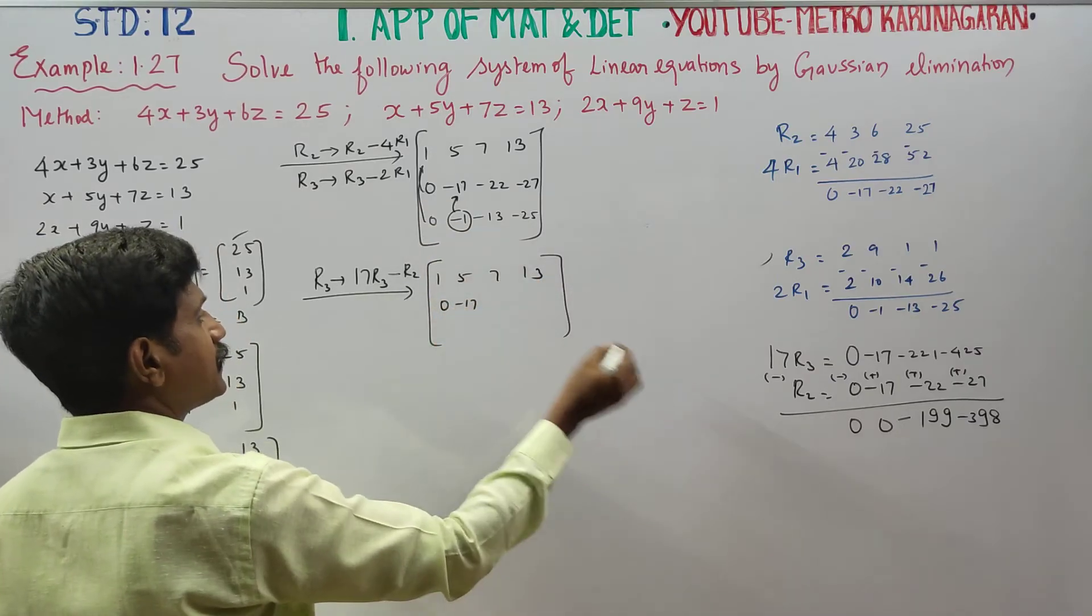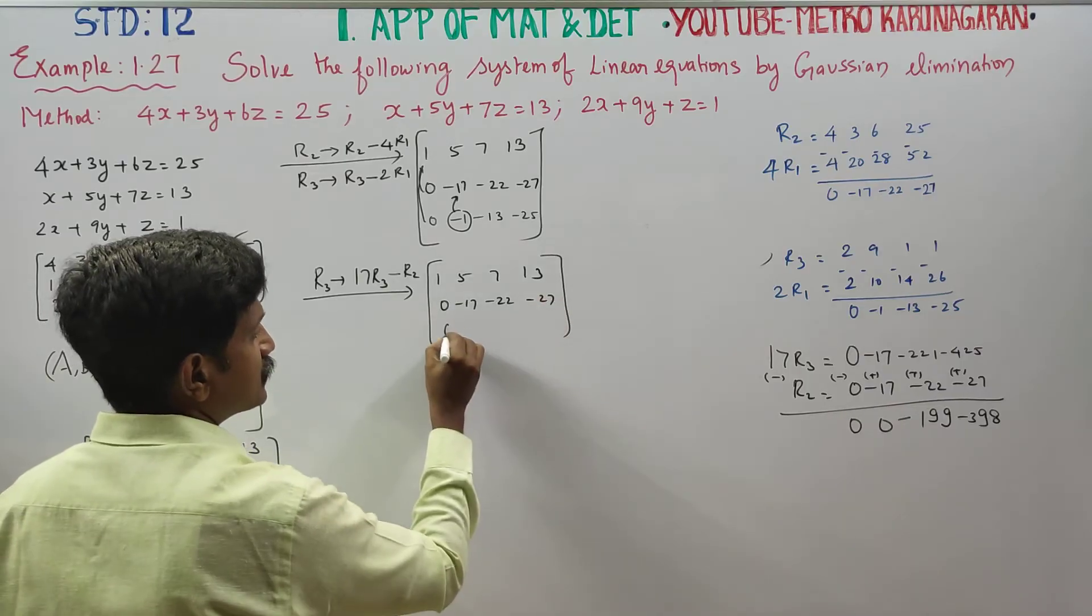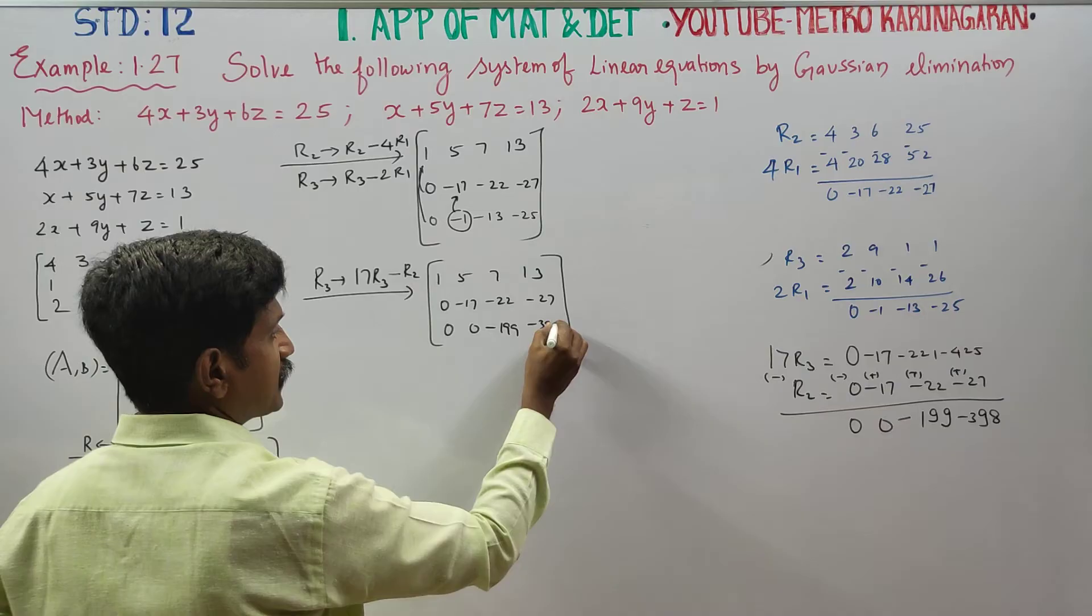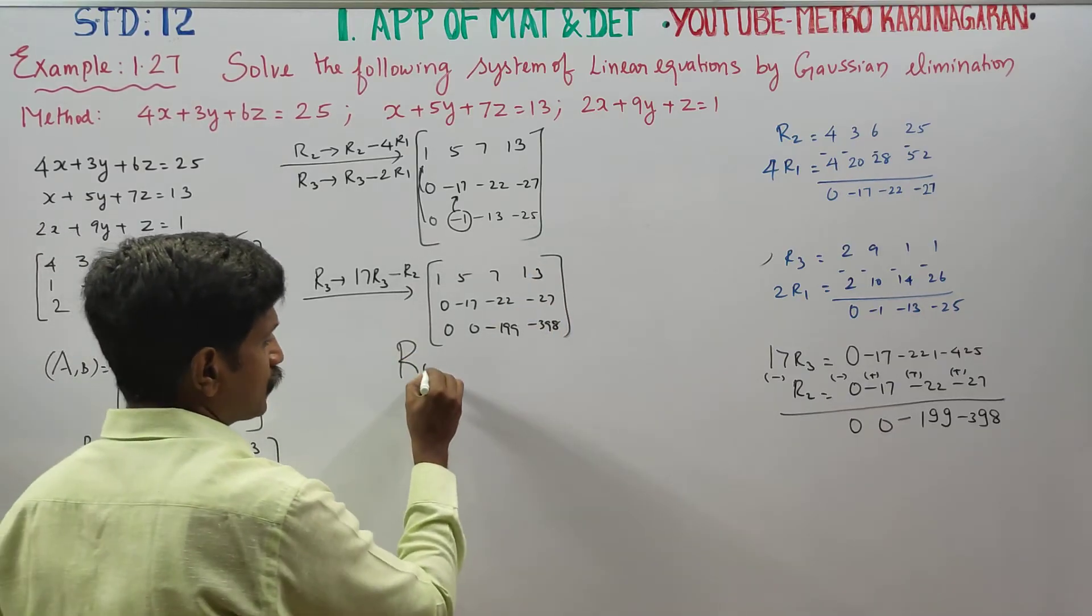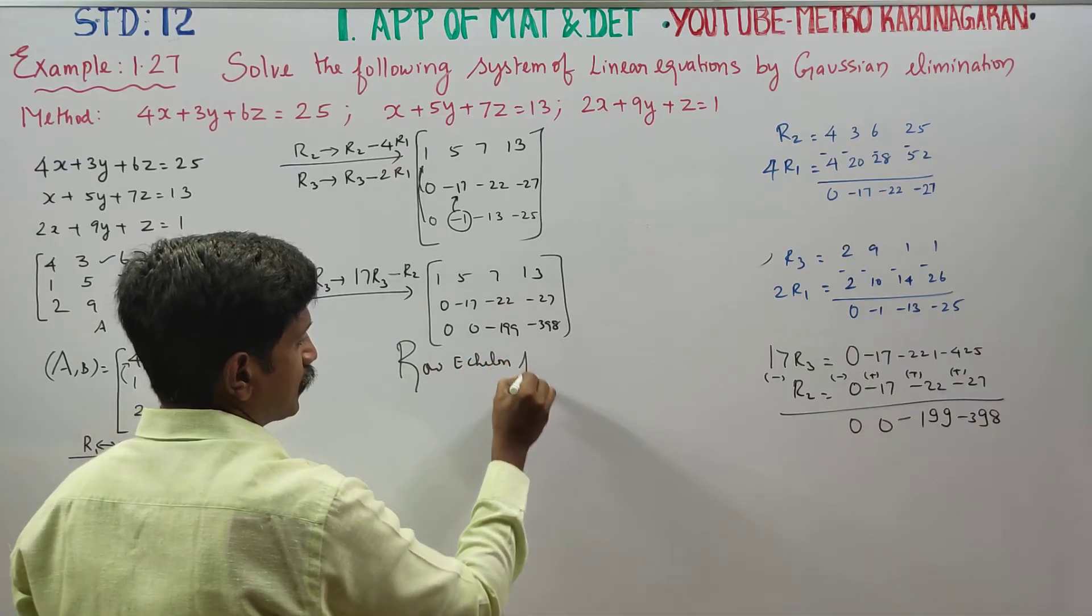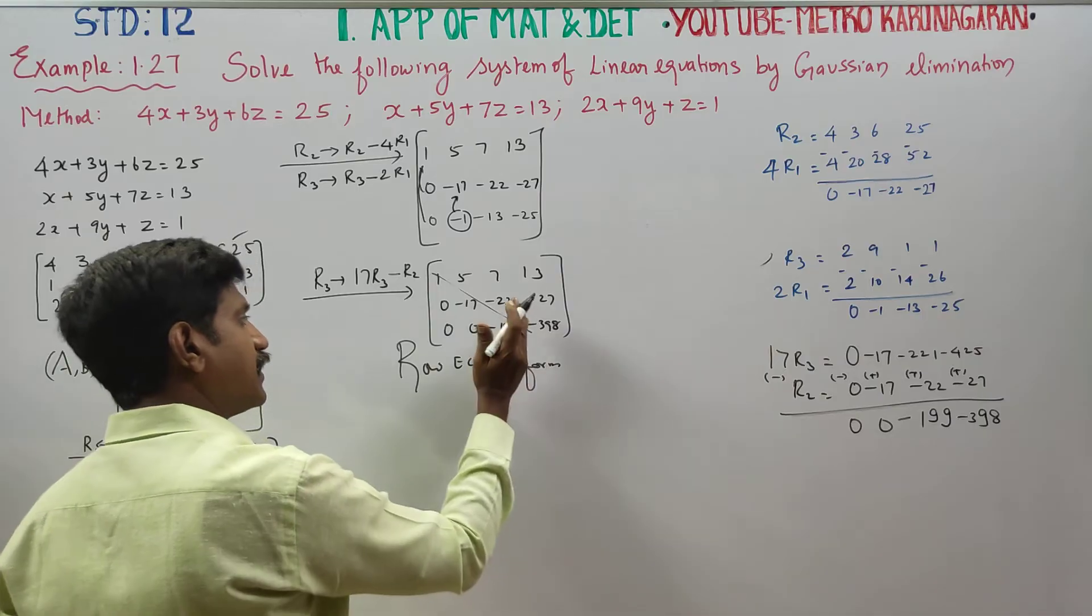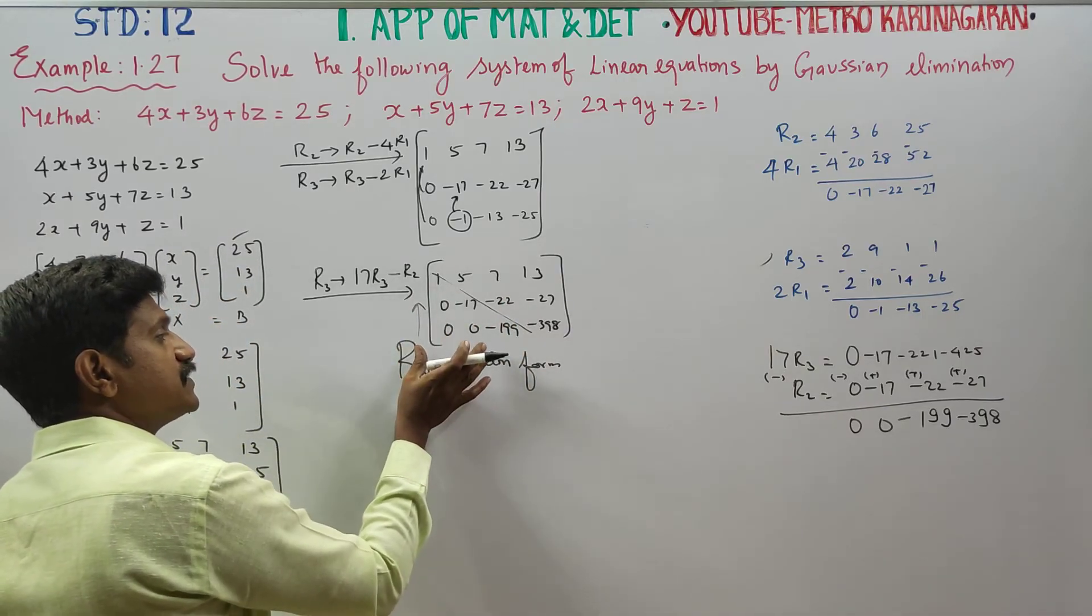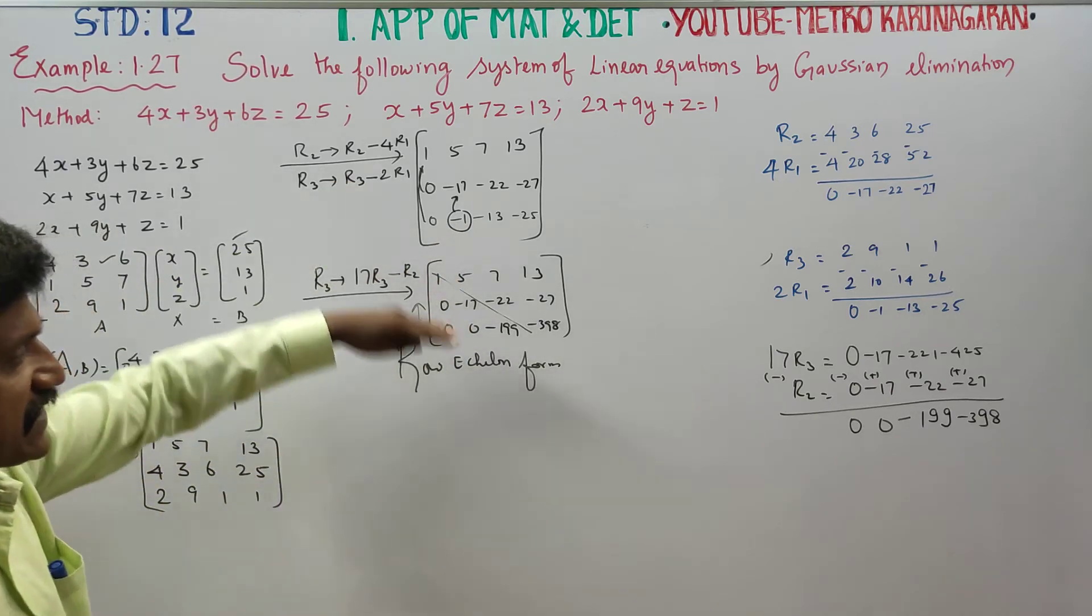R2 is 0, minus 17, minus 22, minus 27. Then minus 398. You have reached row echelon form. The principal diagonal is non-zero, number of zeros in descending order with maximum zeros.